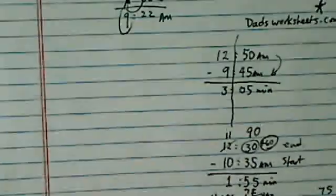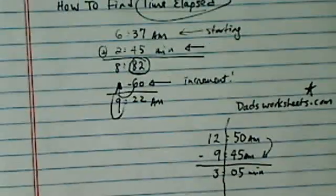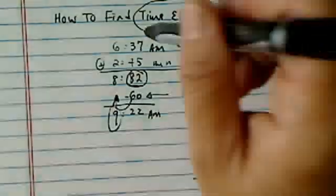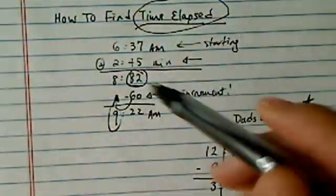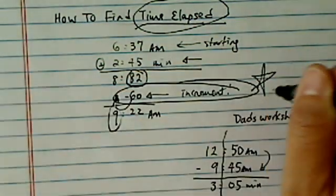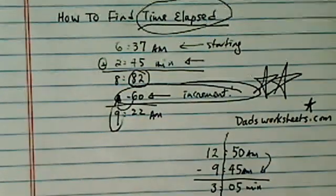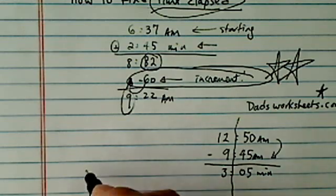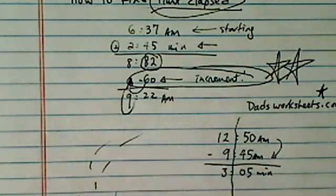To summarize, the big thing is that when you increment in time, when you're doing the finding elapsed time, increment is 60. This is the big important part. So when you borrow, it's 60. When you carry it over, it's also 60. Hope this helped. Have a confident day.